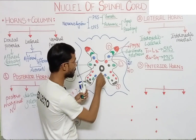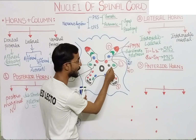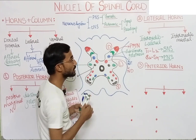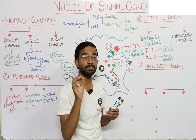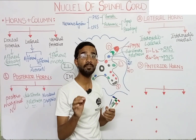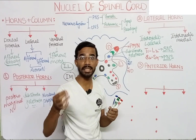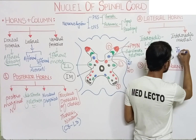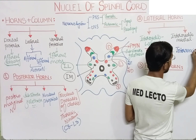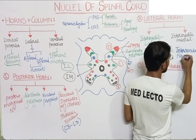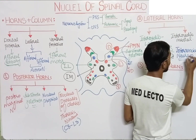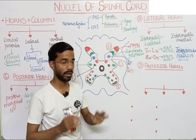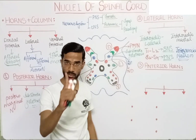The intermediomedial nucleus is medial to the lateral nucleus. The most important feature of the intermediomedial region is the presence of interneurons, also called internuncial neurons or relay neurons. This region is specific for the autonomic nervous system.